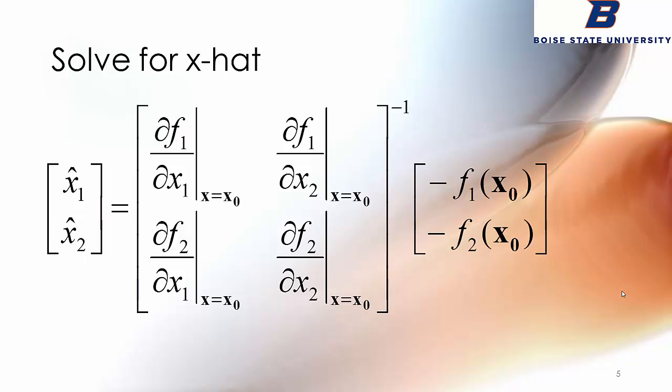Solving for x hat gives us this matrix form where the x hats are represented by taking these functions evaluated at the initial guess, pre-multiplying times the inverse of this matrix of partial derivatives. Keep in mind that each one of these partial derivatives is just a number. This is just a two by two matrix with numbers on it. These are called residuals - a measure of how close x0 got us to our solution. These are just numbers, pre-multiply times this matrix and you get our updates.